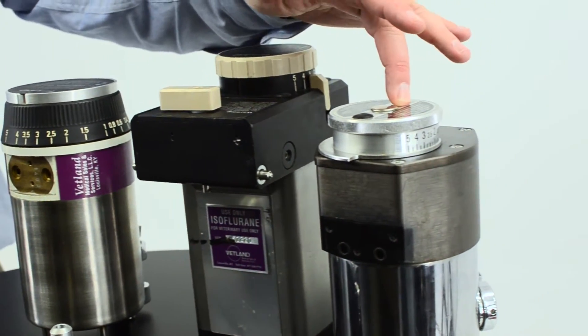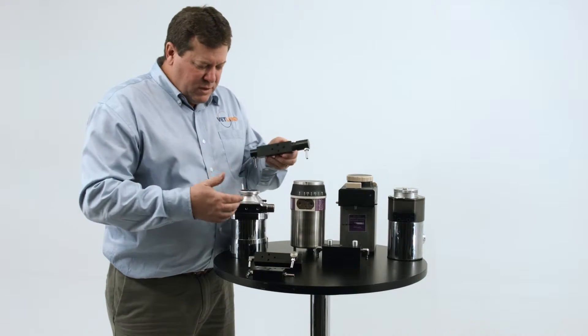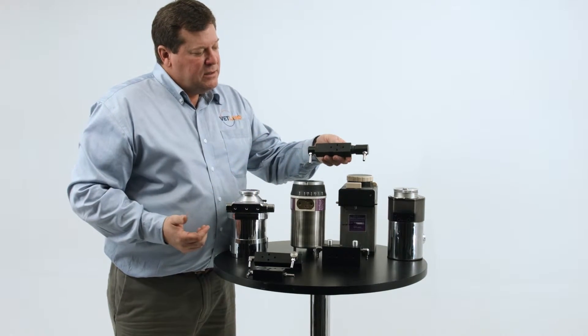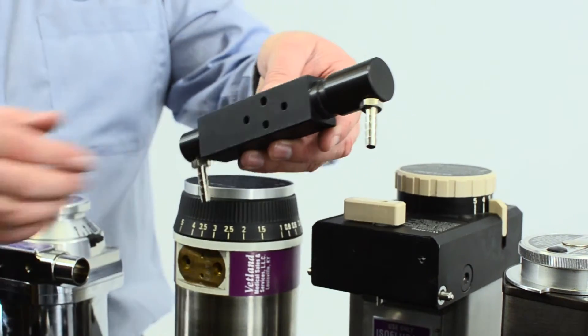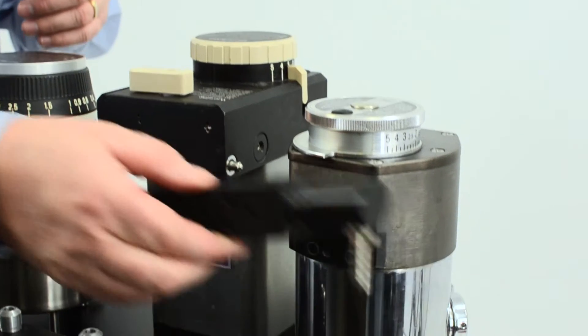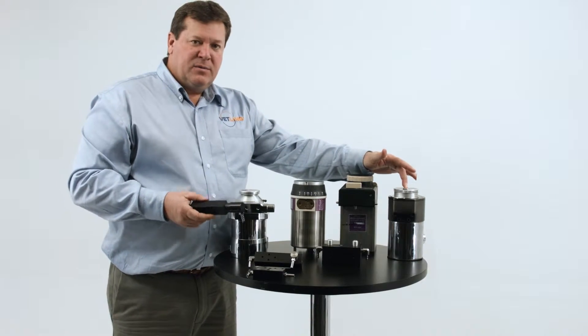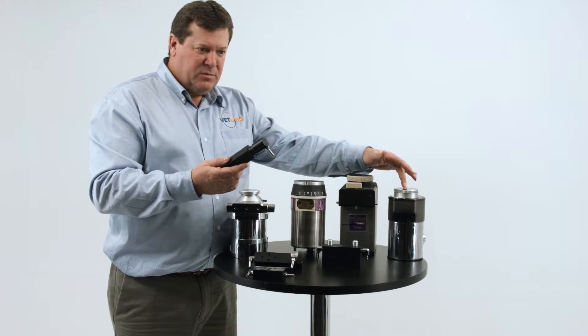For the Ohio vaporizer, we have the same 23 millimeter tapered fit manifold for the Ohio vaporizer. So if you purchase an Ohio vaporizer, you'll need the 23 millimeter manifold.